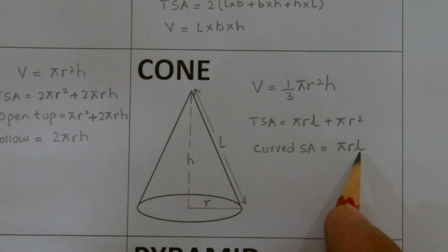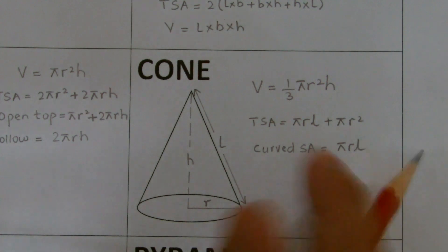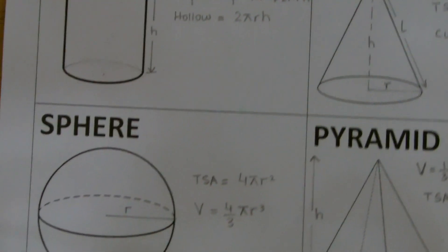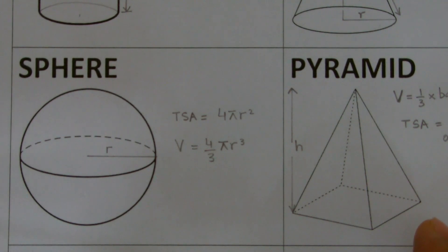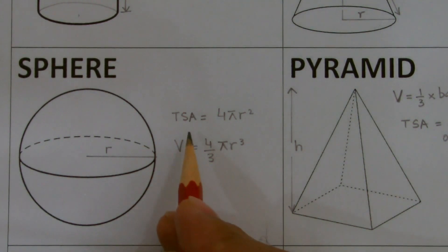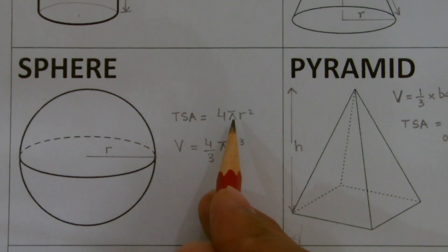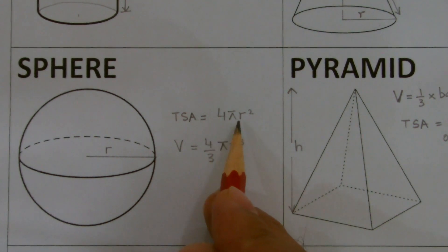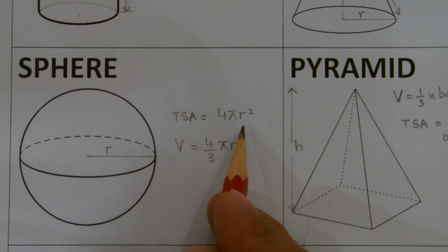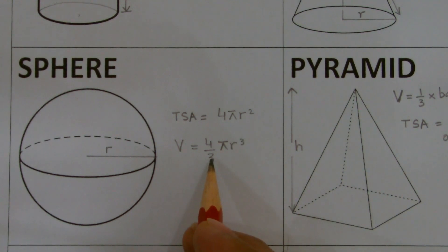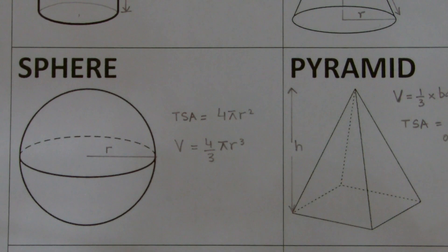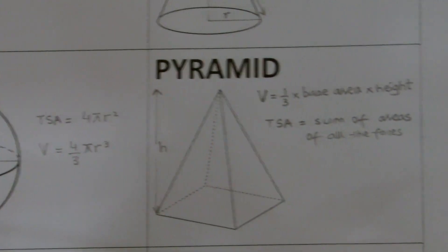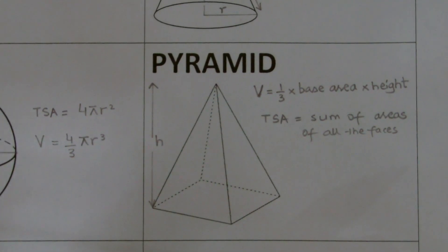Moving on, a sphere is a three-dimensional figure where the total surface area is 4πr² and the volume is calculated using the relation (4/3)πr³.